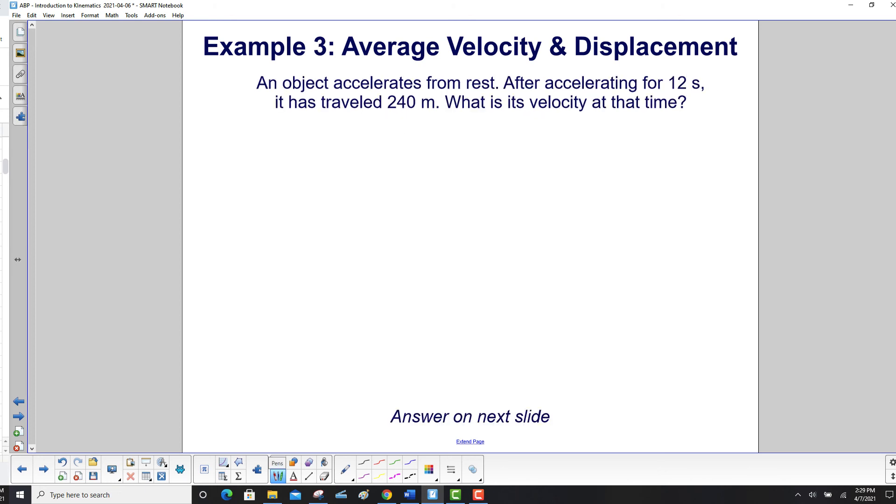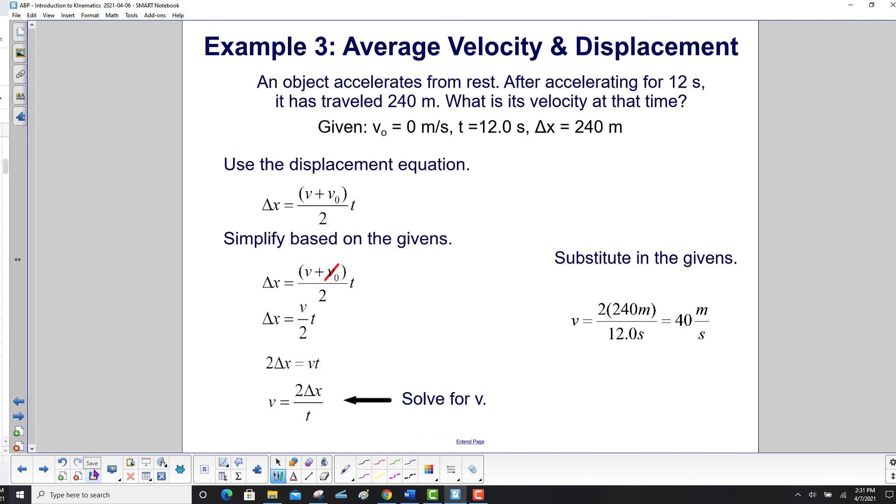An object accelerates from rest. After accelerating for 12 seconds, it has traveled 240 meters. What is its velocity at that time?